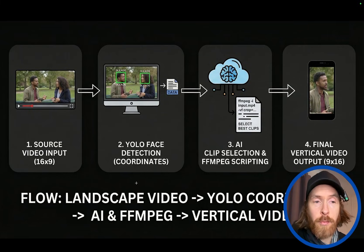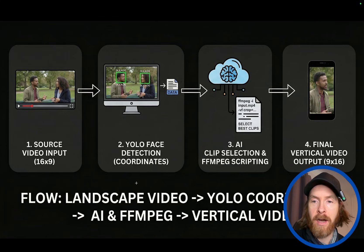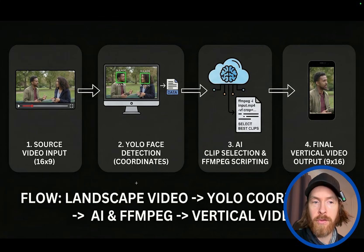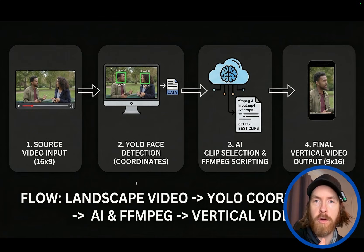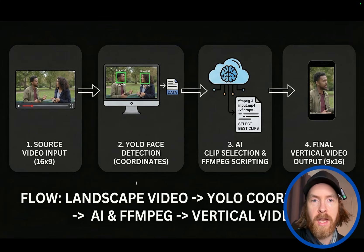Today I wanted to bring you along doing a full application from start to beginning. What we want to do is create a flow from source input, then we're going to use the YOLO — You Only Look Once — machine learning library to actually detect the faces and find the coordinates.